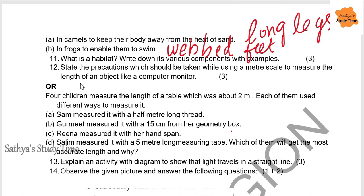Question 12: State the precautions to be taken while using a meter scale to measure the length of an object like a computer monitor. Three precautions: make sure you place the scale along its length; the eyes should be perpendicular to the object to avoid any parallax error; if the end of the scale is broken, make sure you place the proper unbroken end to the object to mark the measurement.